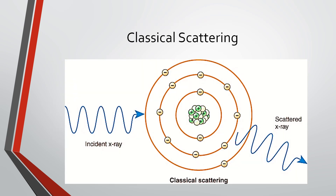Here we have a diagram of the classical interaction event. The incident x-ray comes in, interacts with the atom, and is released in a new direction instead of continuing straight through. Note that the energy coming in is the same as the energy coming out.